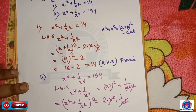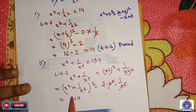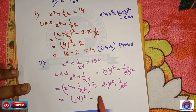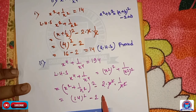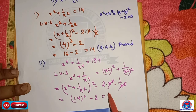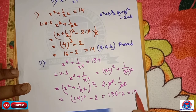The x square cancels. We already got x square plus 1 by x square equal to 14. So we write 14 its whole square minus 2. Multiplying gives 196 minus 2, that means 194.